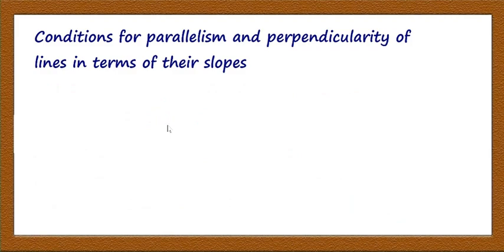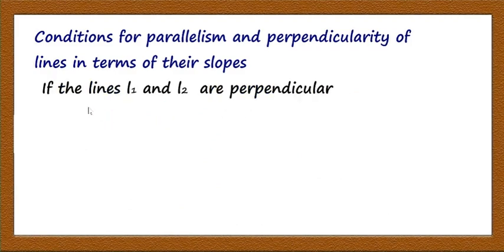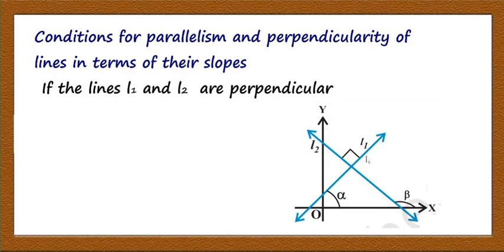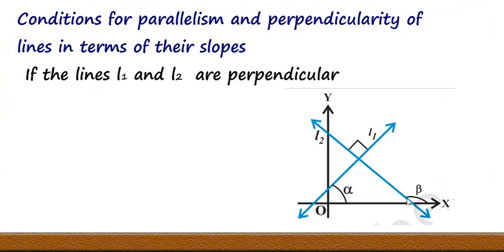Similarly, let us get the condition for perpendicularity. If lines l1 and l2 are perpendicular, let the angle made by one line be alpha and the other be beta. Then the angle on the other side is 180 - beta, and the angle between the perpendicular lines is 90 degrees.